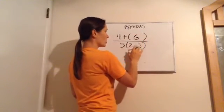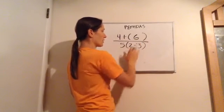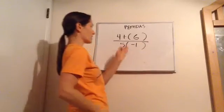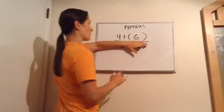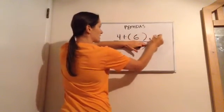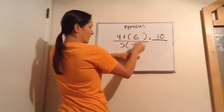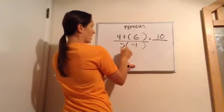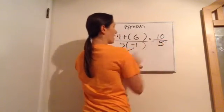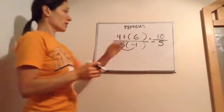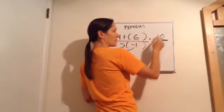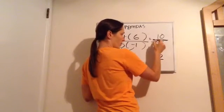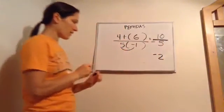Parentheses: 3 × 2 = 6, so I change that to 6. Then 2 − 3, or plus a negative, is −1. I'm going to do the top first: 4 + 6 = 10. On the bottom: 5 × (−1) = −5. So we have 10 over −5. Ten divided by five is two, and since we have opposite signs, the answer is negative two.